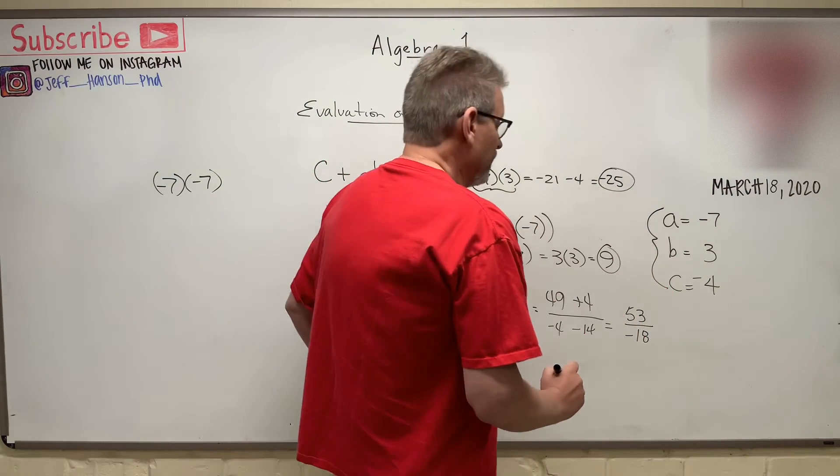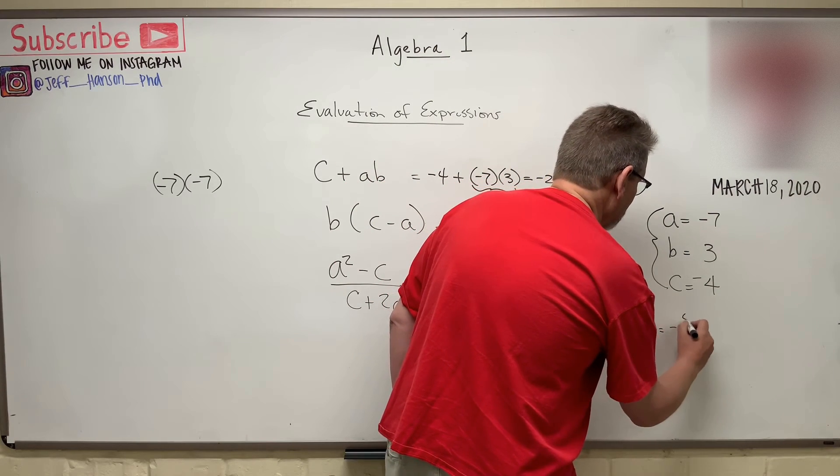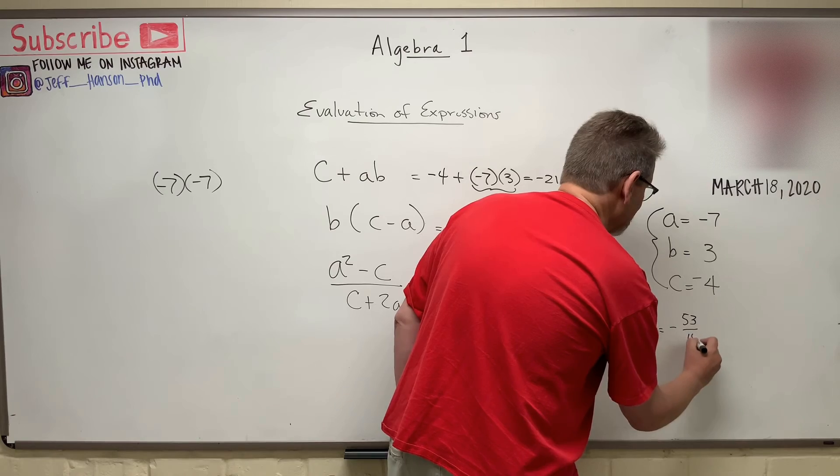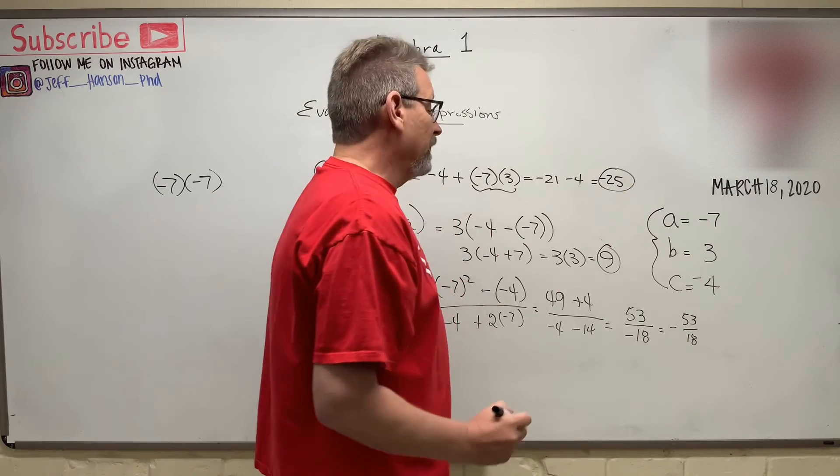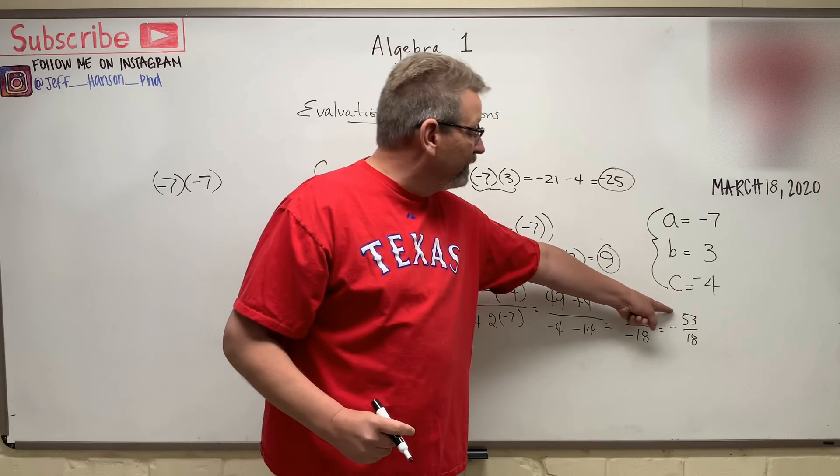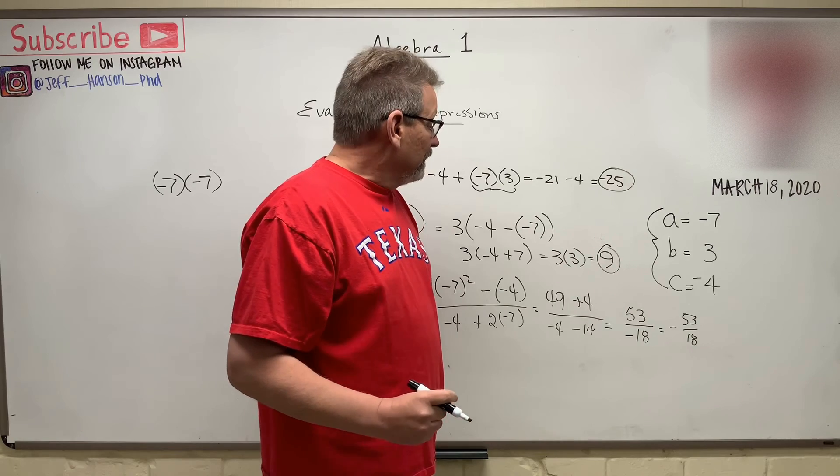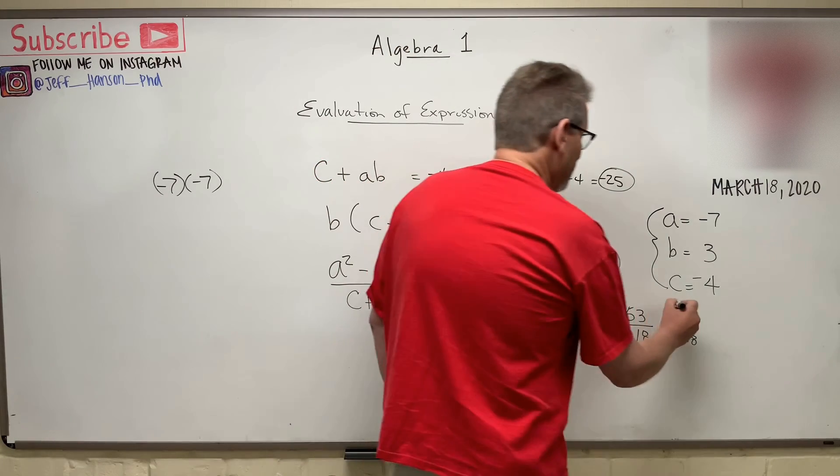Okay. So we could write that as negative 53 over 18. Okay. Now we'll talk about later on how we could reduce that, but that's not going to reduce because this is a prime number. It will not divide. So we'll just leave that as our final answer there.